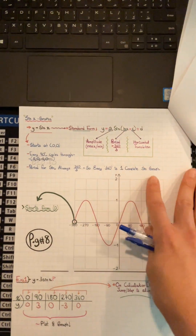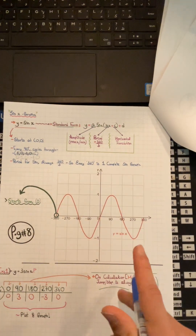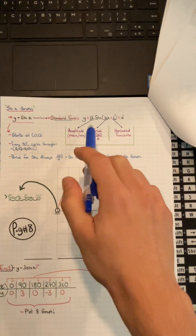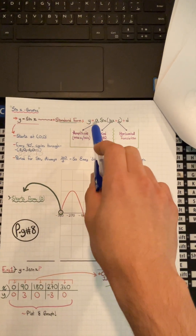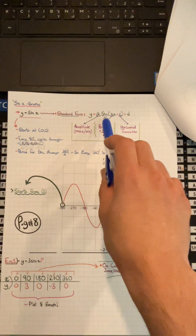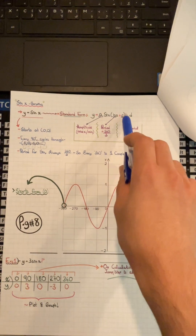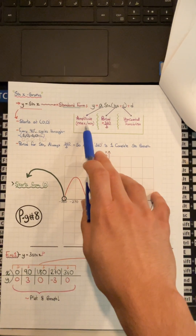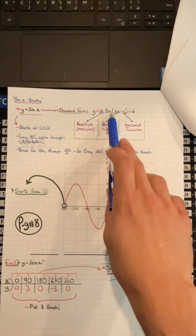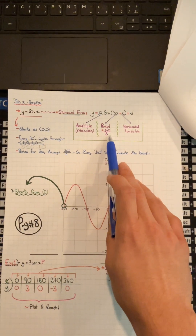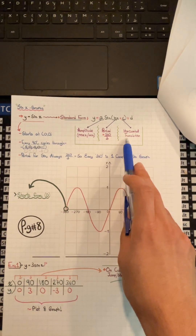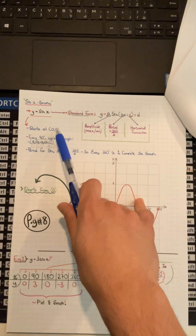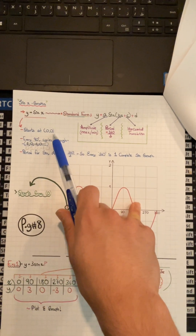Next is the sin graph. y = sin x is your standard form. The full form is y = a·sin(bx + c) + d, where a is the amplitude (maximum or minimum), b relates to the period as 360 over b, and c is the horizontal translation. y = sin x will always start at (0, 0).